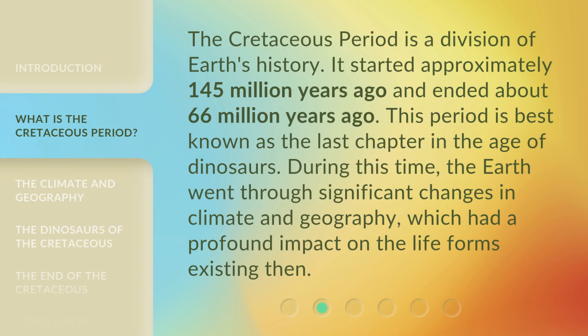The Cretaceous period is a division of Earth's history. It started approximately 145 million years ago and ended about 66 million years ago. This period is best known as the last chapter in the age of dinosaurs. During this time, the Earth went through significant changes in climate and geography, which had a profound impact on the lifeforms existing then.